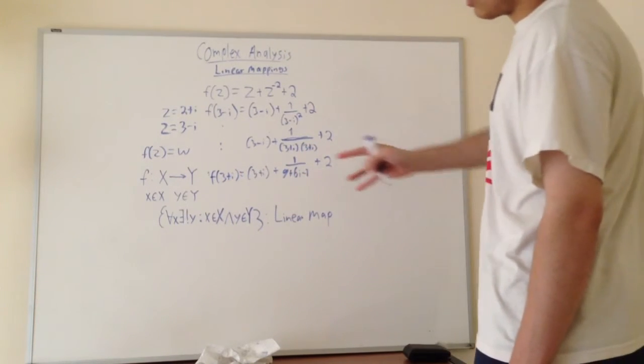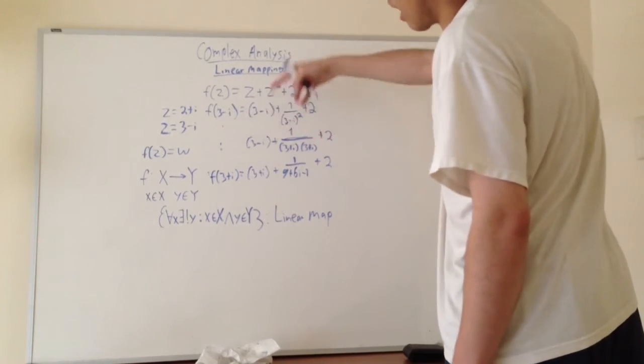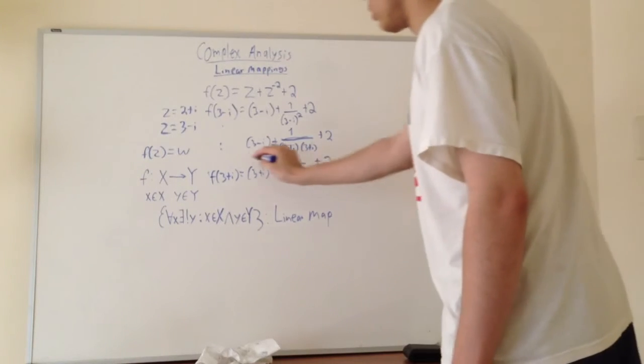So really, if I wanted to know, if I take 3 minus i and I have this function, what would my output be? And this is what you get as your output.